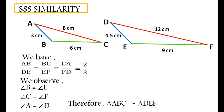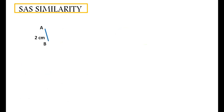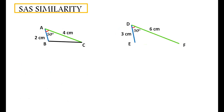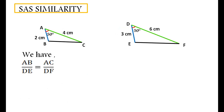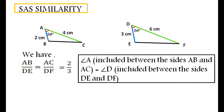Let us see the last one: side-angle-side similarity. We will draw two triangles such that AB equal to 2 cm, AC equal to 4 cm, and angle A equal to 50 degrees. Also, DE equal to 3 cm, DF equal to 6 cm, and angle D equal to 50 degrees. We observe that AB by DE is equal to AC by DF, which is equal to 2 by 3, and angle A, included between sides AB and AC, equals angle D, included between sides DE and DF.